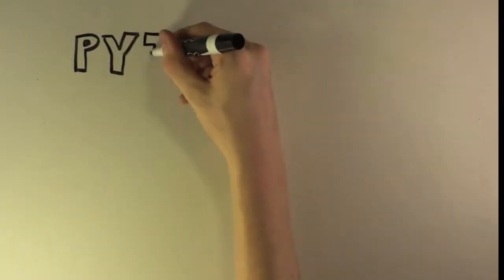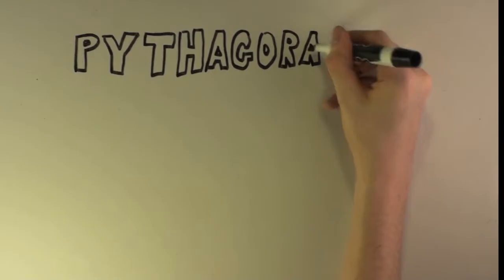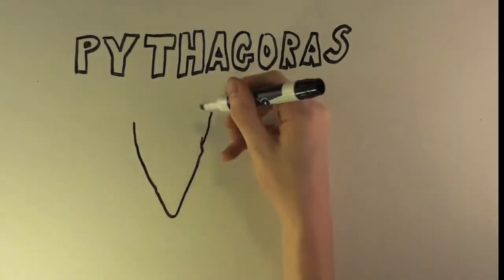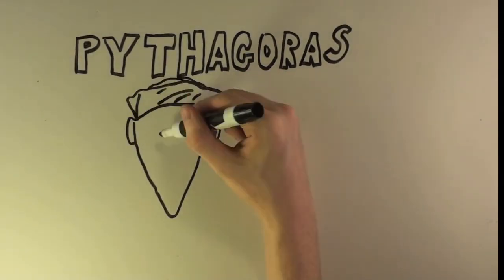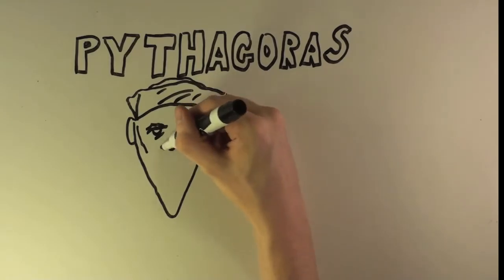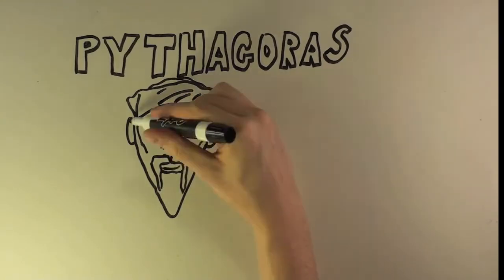While other theories came into being over the course of the following century, it was not until a mathematician and philosopher named Pythagoras came along that people had any idea that the Earth was in fact spherical.